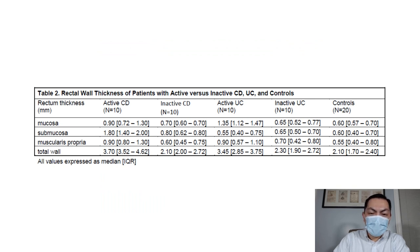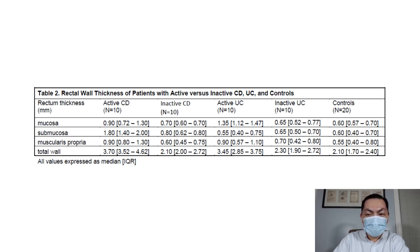We found that patients with active Crohn's disease had significantly thicker rectal mucosa, submucosa, muscularis propria, and total wall layer compared to controls. Patients with active UC had significantly thicker rectal mucosa and total wall layer, but no significant difference in submucosa or muscularis propria layer thickness compared to controls. Importantly, patients with active Crohn's disease had a significantly thicker rectal submucosa compared to patients with UC.